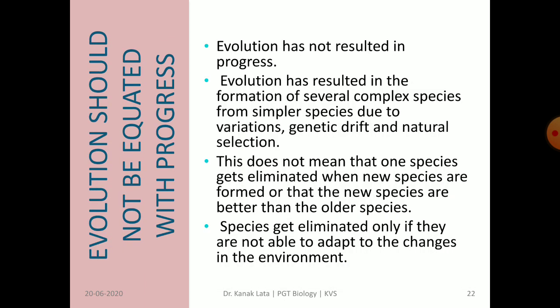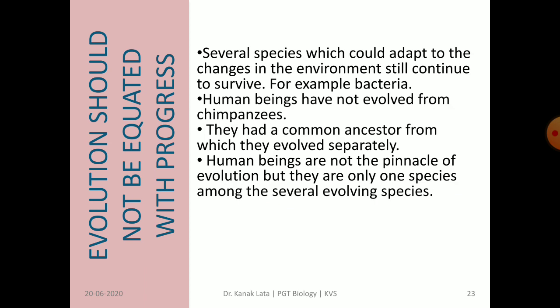Let us see that evolution should not be equated with progress. It is not necessary that evolution always results in progress. Evolution has resulted in the formation of several complex species from simpler species due to variations, genetic drift, and natural selection. This does not mean that one species gets eliminated when new species are formed, or that new species are better than older species. Species will only be eliminated if they are unable to adapt to changes in the environment. For example, bacteria have survived due to their adaptability.